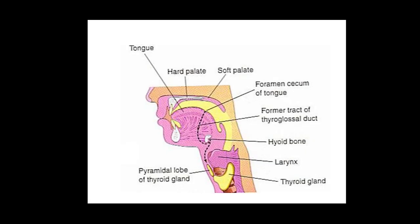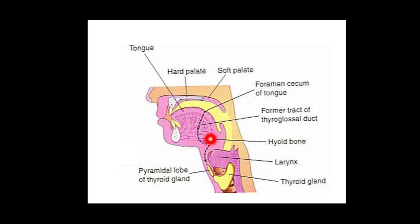This diagram shows the tongue and the dotted line representing the thyroglossal tract. Here is the foramen cecum, which is one end of the tract. It goes closely adjacent to the hyoid bone, then dips down and comes towards the isthmus of the thyroid gland.